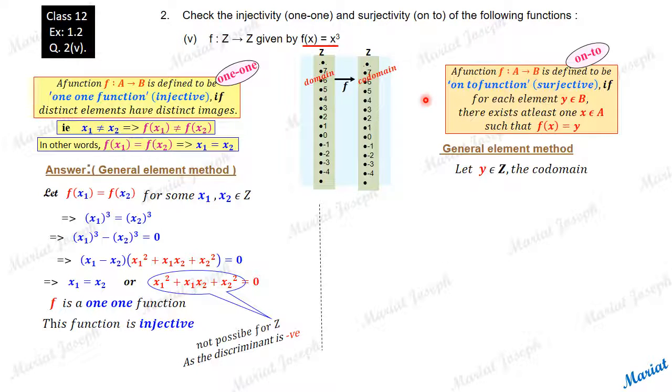Let y belong to B, y taken from the co-domain, any y. And if possible, let this y be written as x cube. If possible, this possibility we have to check. It is yet to be checked. Let y equal to x³ for some x.